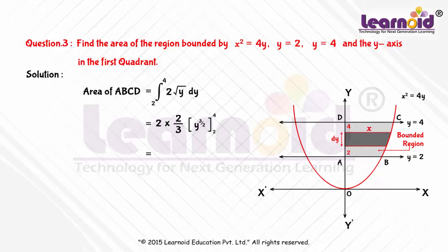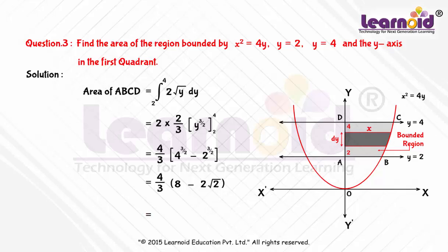This equals (4/3) · [4^(3/2) − 2^(3/2)], which equals (4/3) · [8 − 2√2], which equals (32 − 8√2)/3 square units. So the area of the bounded region is (32 − 8√2)/3 square units.